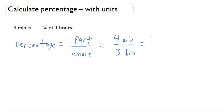The top is going to stay as 4 minutes. And then I'm going to multiply 3 hours times 60 minutes in an hour. And that's going to give me 180 minutes. So now I have this fraction in similar units.